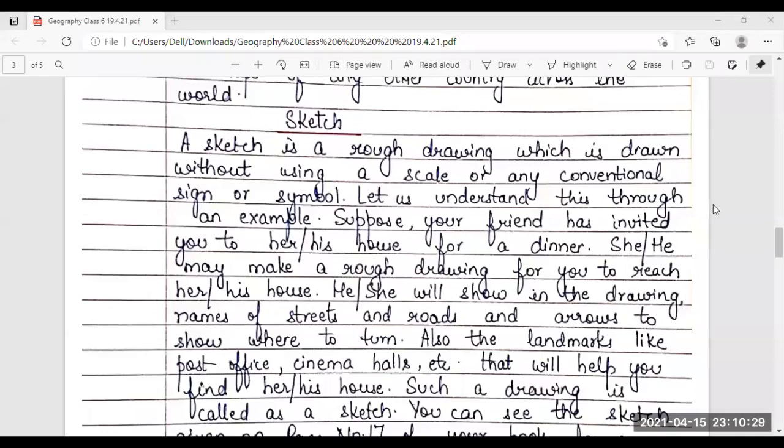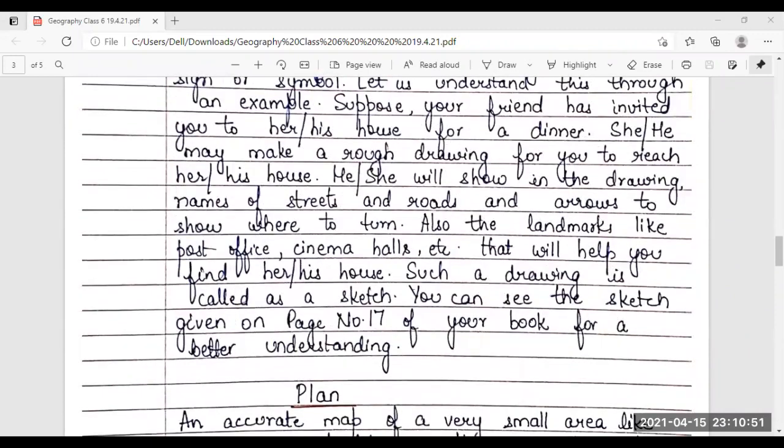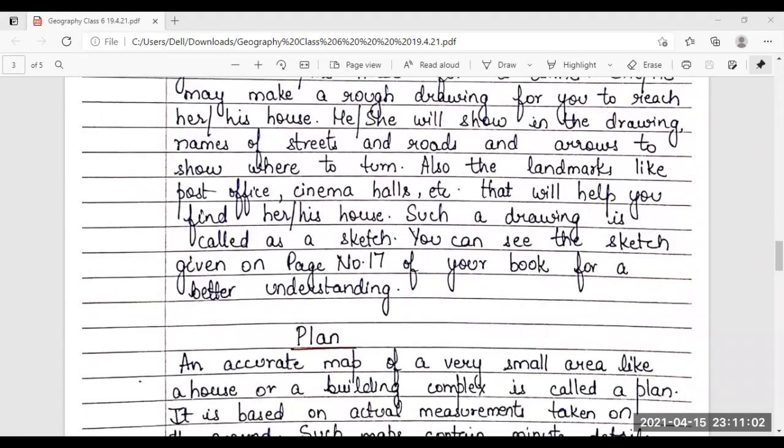Let us try to understand this through an example. Suppose your friend has invited you to her or his house for a dinner. She or he makes a rough drawing for you to reach her or his house. He or she will show in the drawing names of streets and roads and arrows to show where to turn.